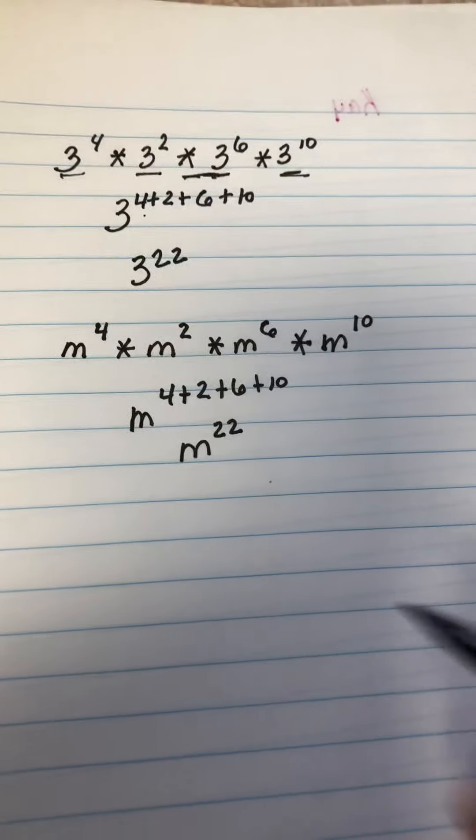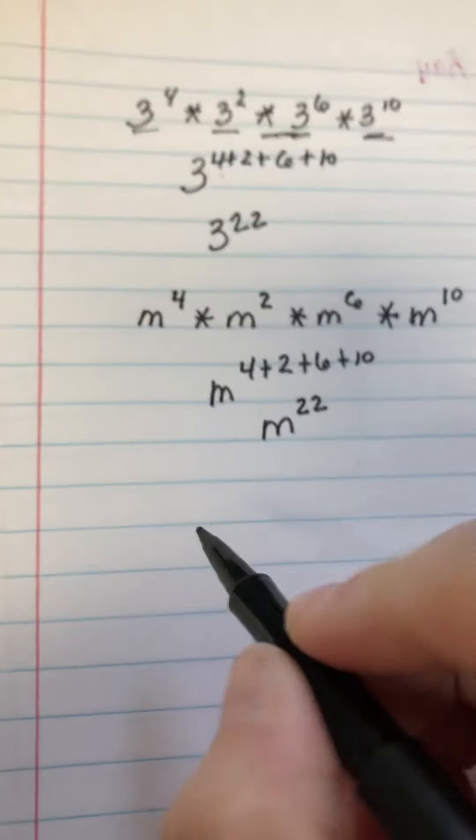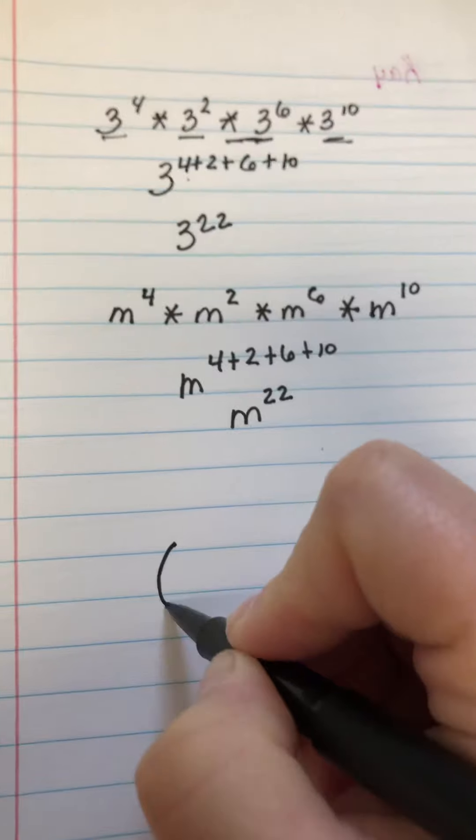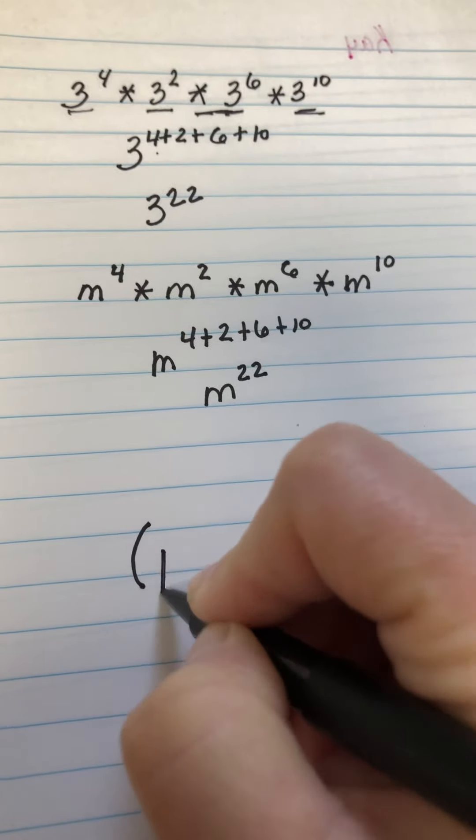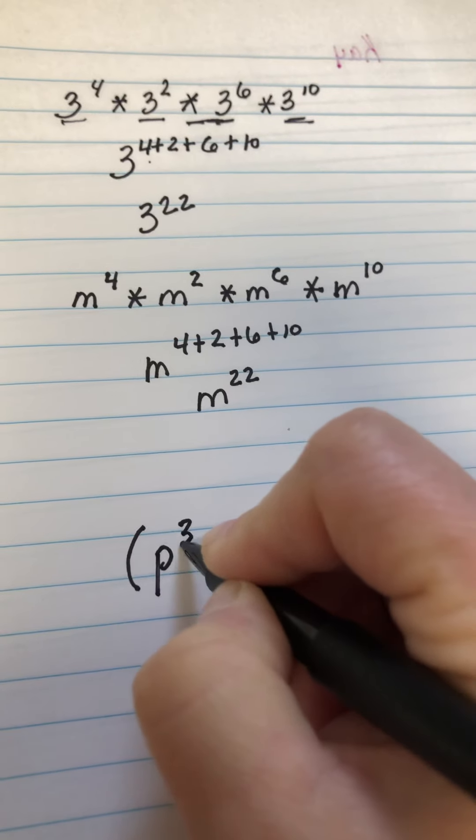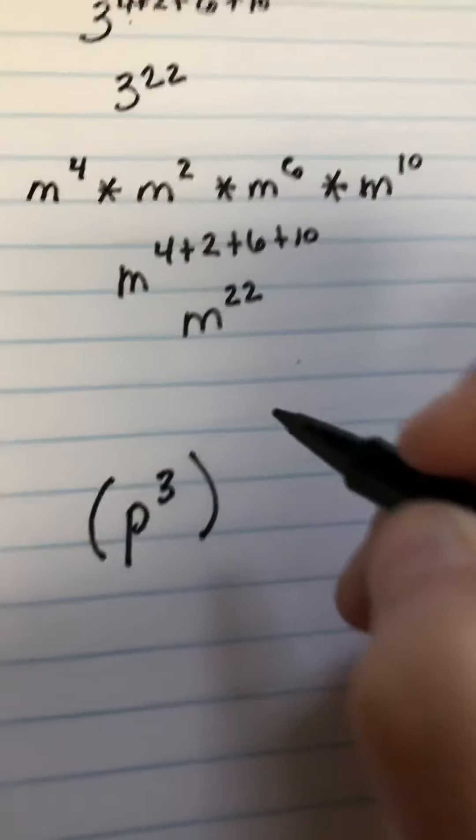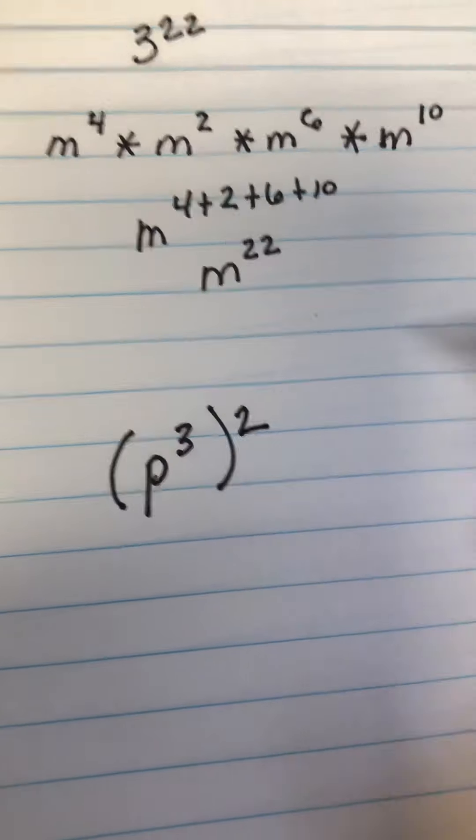Now, those are the simpler ones. The more difficult ones will look similar to this. It is a base to an exponent multiplied by another exponent.